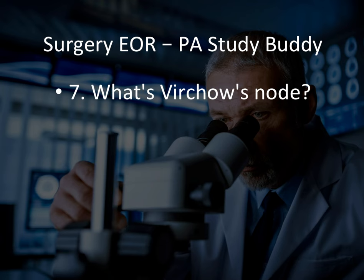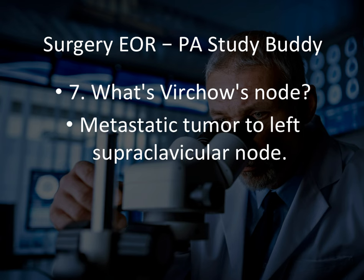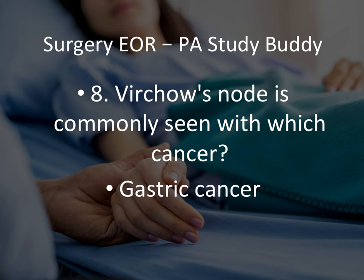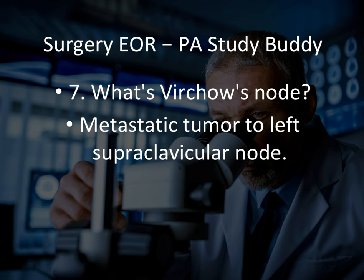Number seven: what is Virchow's node? Virchow's node is metastatic tumor to the left supraclavicular node. In a stem, they'll tell you during physical exam you found a node in the left supraclavicular region and ask what it is most likely significant for. Virchow's node is commonly seen in gastric cancer. So: gastric cancer, Virchow's node, left supraclavicular area.